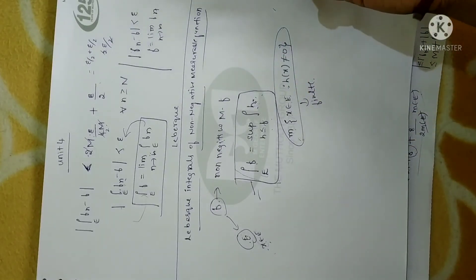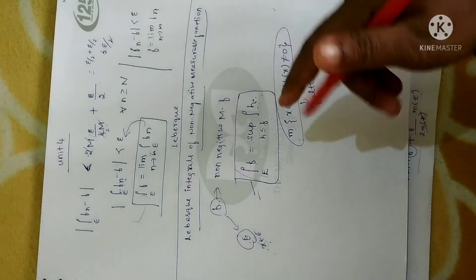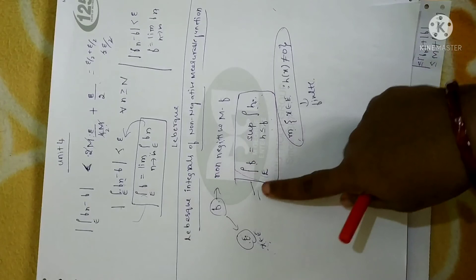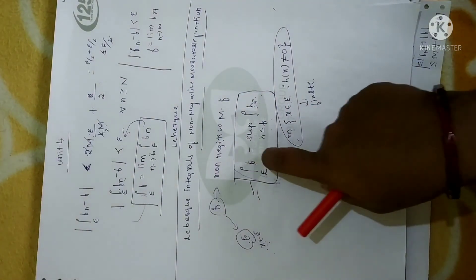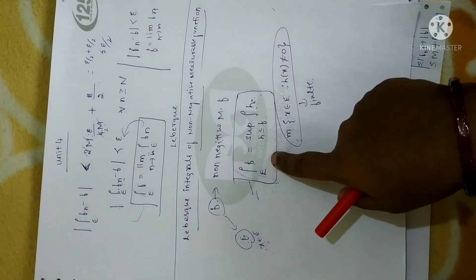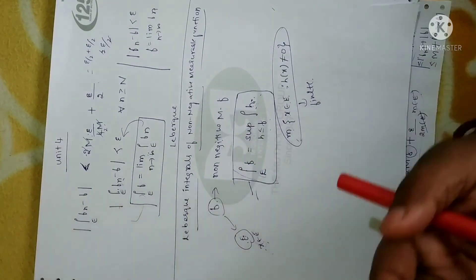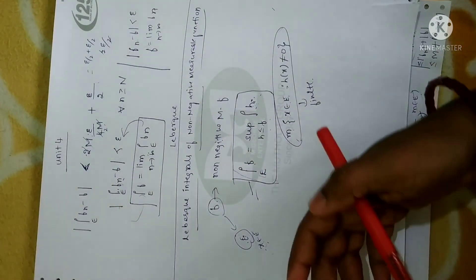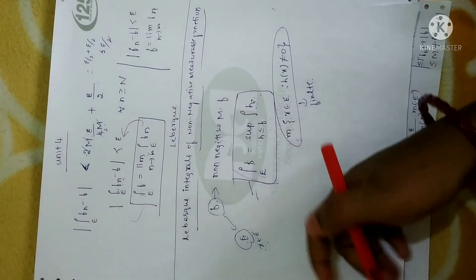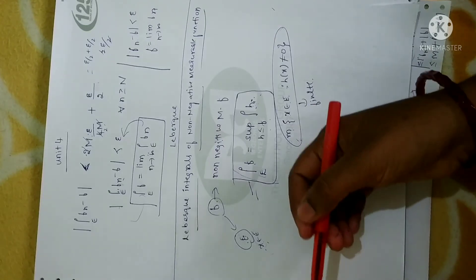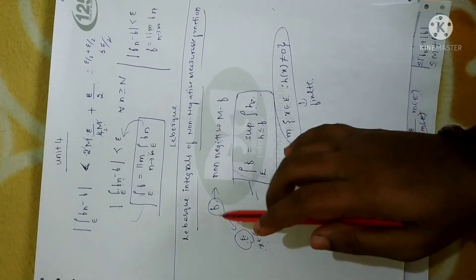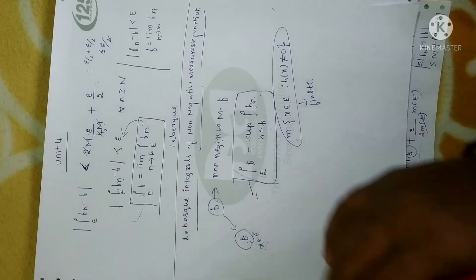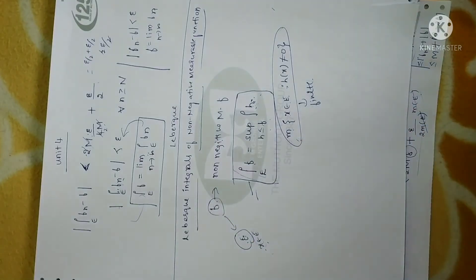Whenever we have the Lebesgue integral of F defined over a set E, it can be written as the supremum over h ≤ F of the integral of h, where h varies over bounded measurable functions. You have to remember this definition. In the next session I will continue with one more important theorem using this property. Please practice this theorem as it is very important. Thank you.